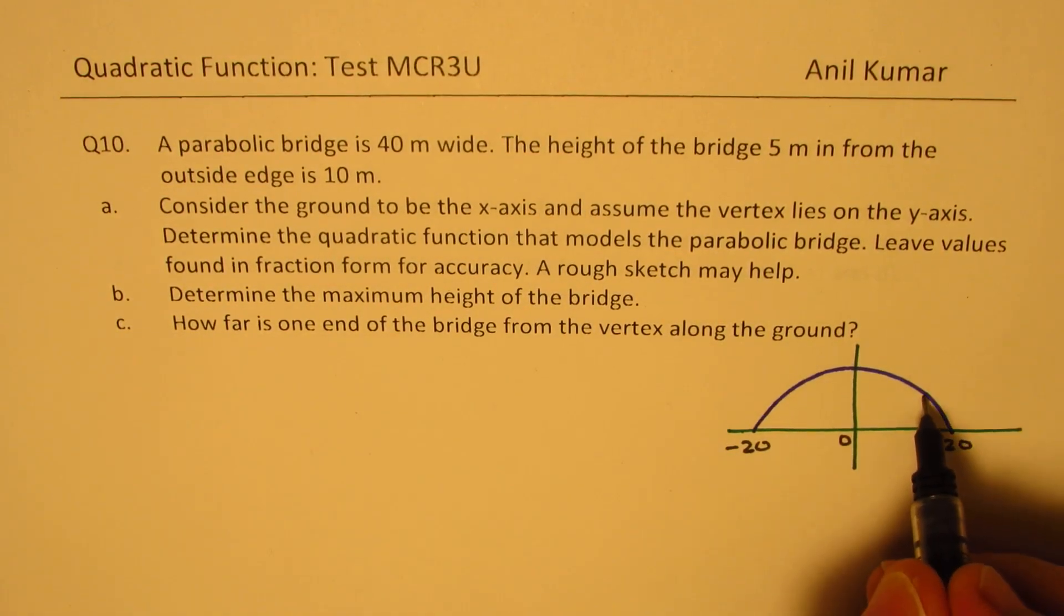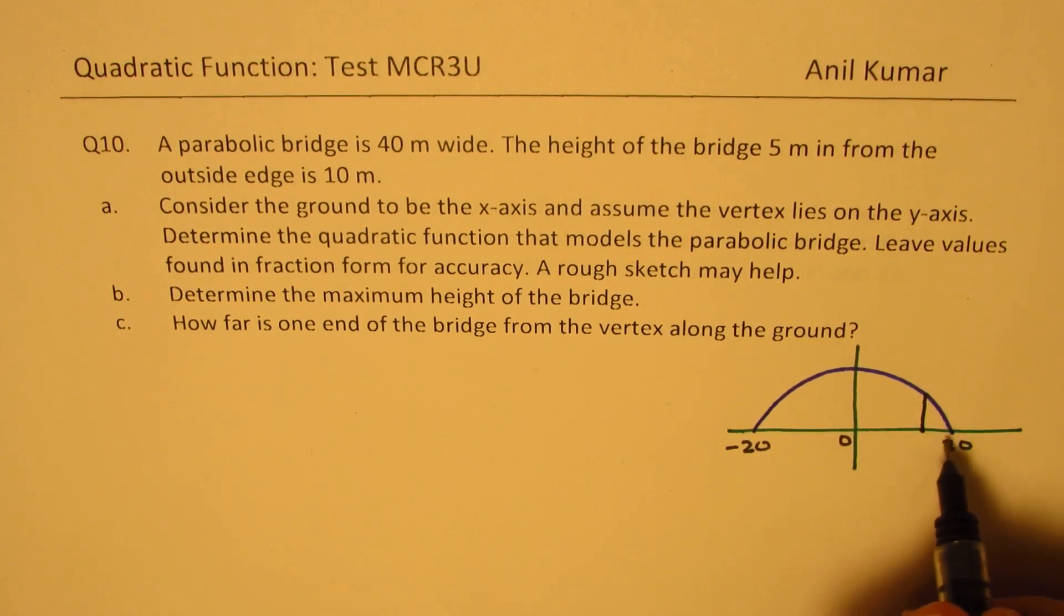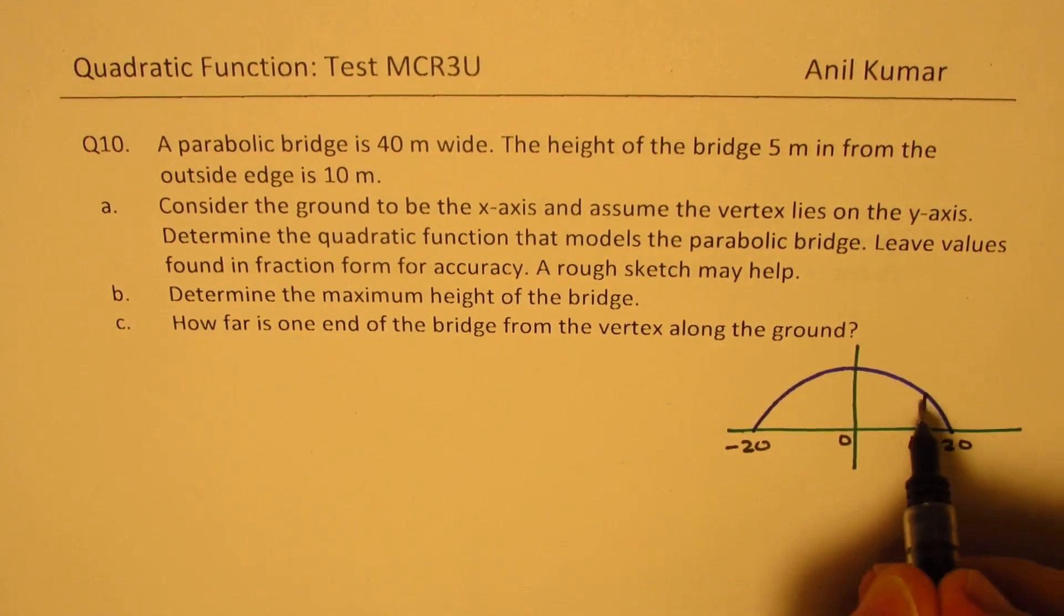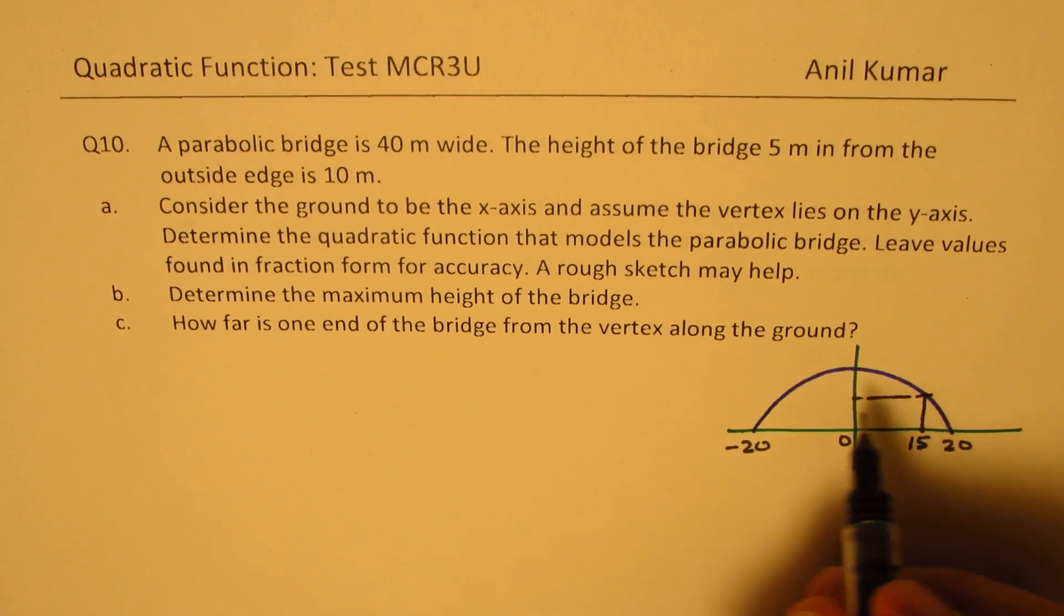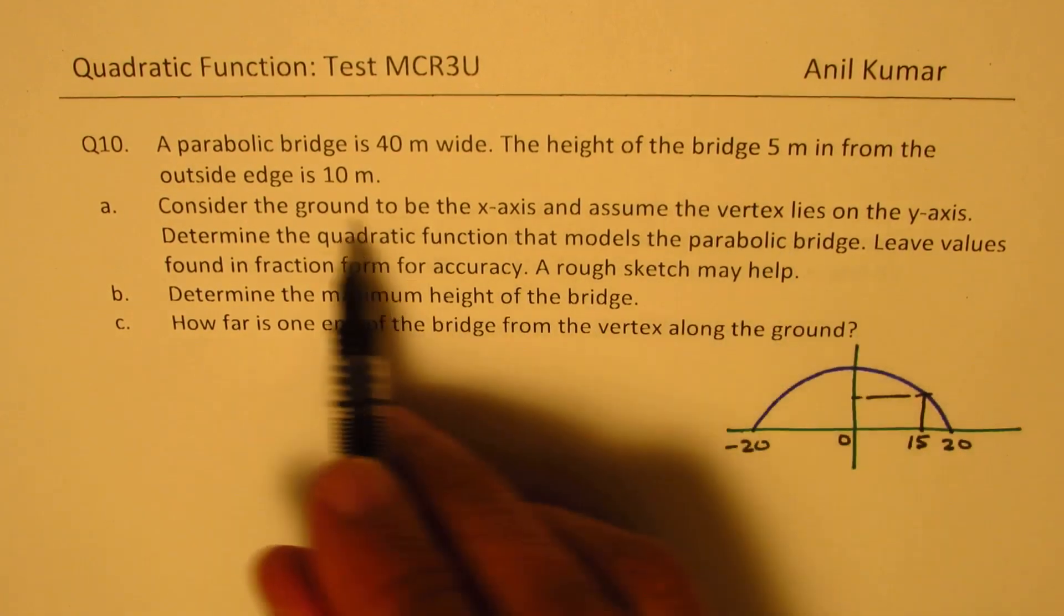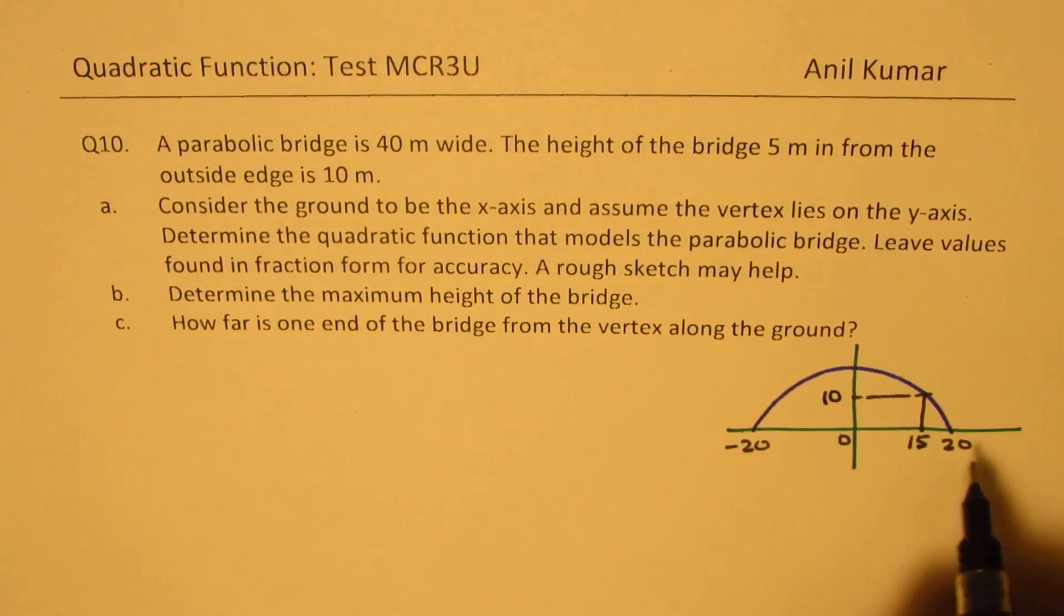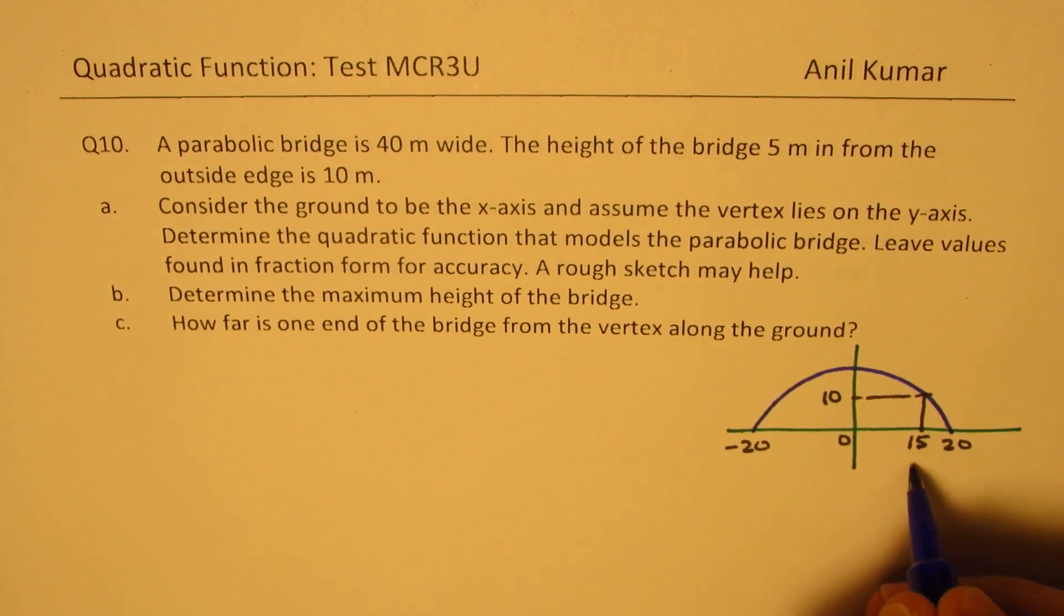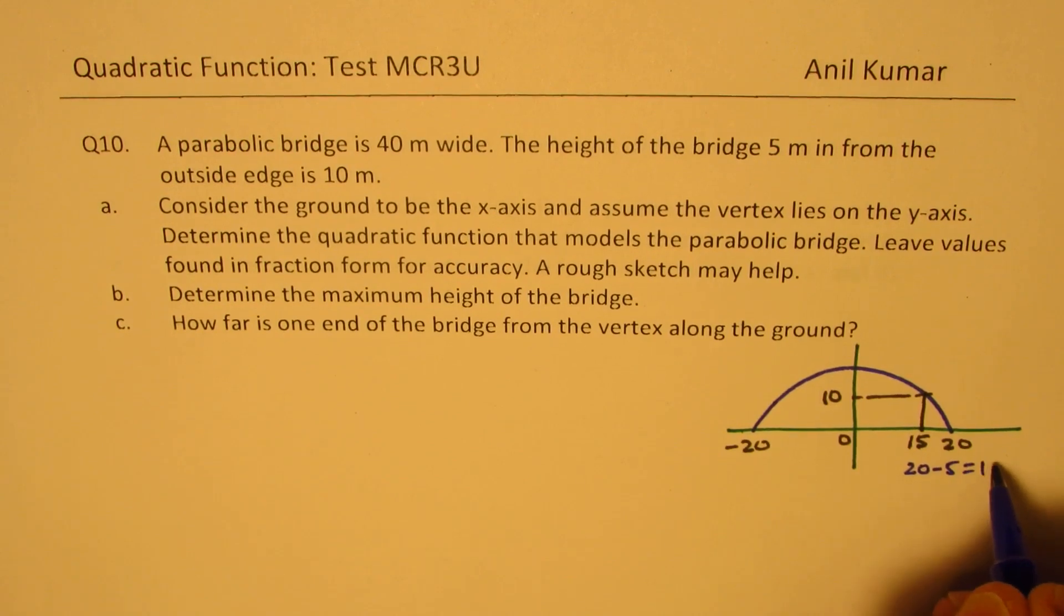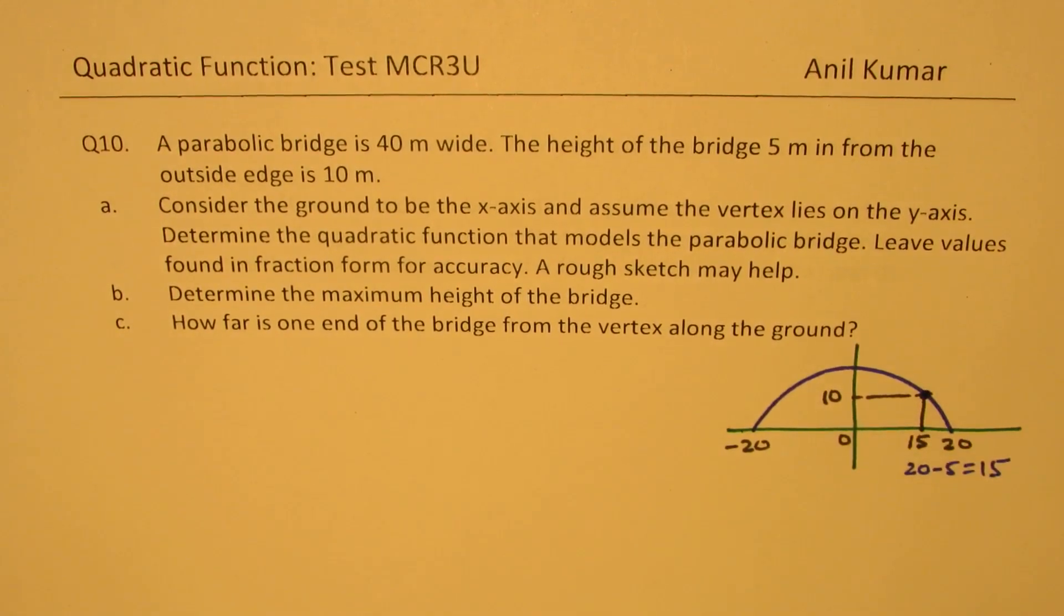So that is what it is. And we are given a point here. 5 meters away means here is 15. And this point will be 10. So when this is 5 meters, so minus 5, 15 is 20, minus 5 is 15. That is what gives me 15. Correct. So we have this point given to us.